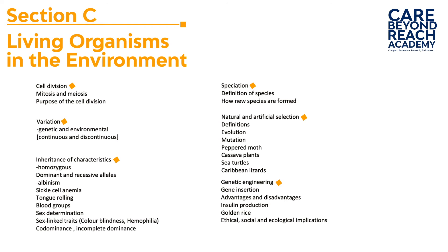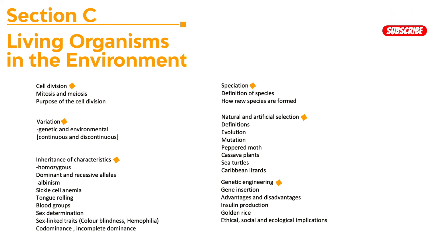Common sex-linked traits include hemophilia and color blindness. We also cover codominance using blood groups, inheritance of traits like albinism, sickle cell anemia, and the ability to roll one's tongue, as well as incomplete dominance. After inheritance we look at speciation — understanding what a species is and how new species are formed. Then natural selection covers selection pressures in the environment, how organisms evolve, and examples such as Caribbean lizards, sea turtles, and the peppered moth.